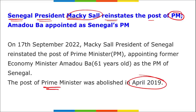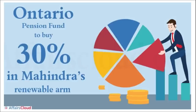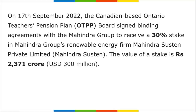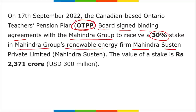The capital of Senegal is Dakar, the president is Macky Sall, and the currency is the West African CFA franc. Ontario Teachers' Pension Plan (OTPP), a Canadian pension fund, signed a binding agreement with Mahindra Group to acquire a 30% stake in Mahindra Susten Private Limited — Mahindra's renewable energy firm — valued at approximately ₹2,371 crore, or roughly $300 million USD.